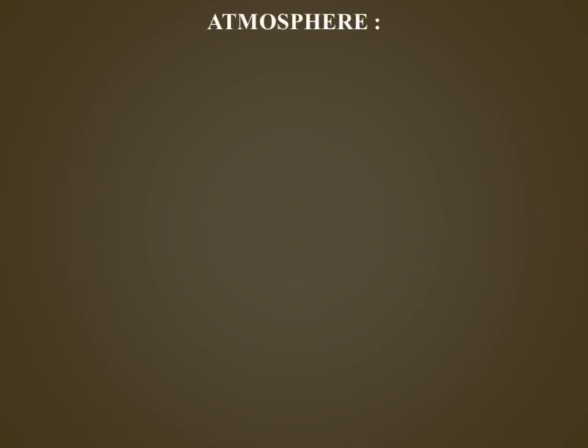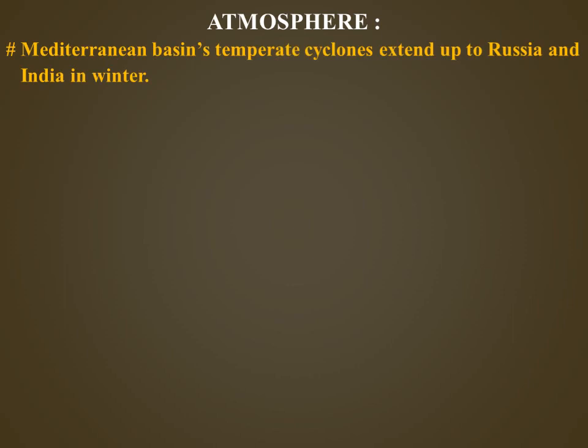Temperate cyclones do not become weak like tropical cyclones upon reaching the land. They commonly occur over the North Atlantic Ocean, northwest Europe, Mediterranean Basin, and extend up to Russia and India in winter. In India, they are called western disturbances. A front is a boundary separating warm and cold air masses, where one type of air mass is usually denser than the other, with different temperatures.